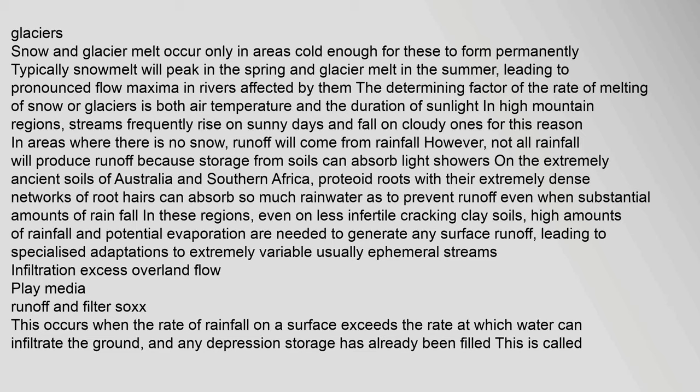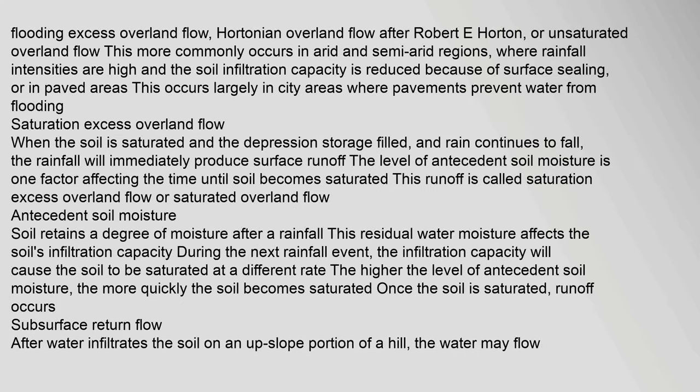Infiltration Excess Overland Flow occurs when the rate of rainfall on a surface exceeds the rate at which water can infiltrate the ground, and any depression storage has already been filled. This is called Hortonian overland flow, after Robert E. Horton, or unsaturated overland flow. This more commonly occurs in arid and semi-arid regions where rainfall intensities are high and the soil infiltration capacity is reduced because of surface sealing, or in paved areas.